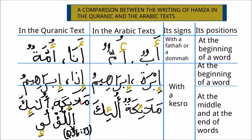But in the Quranic text, Hamza maintains its position of being written below the letter that it comes with when it takes a Kasra. For example, in both Mala'ikatun and Ula'ikatun, Hamza is written below the dotless Ya, and the Kasra is written below the Hamza. Also in this word, Lu'lu'i, which is found in Quran 56 verse 23, Hamza is written below a Waw because it takes Kasra, and not above the Waw.